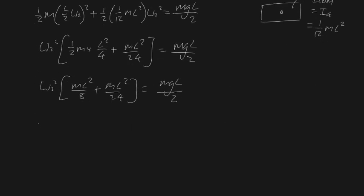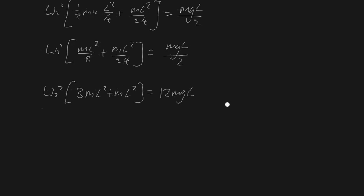And let's multiply both sides by 24. I feel like that's the best way to go. Let's see how many 8's go into 24. It'll be 3. So that'll be 3mL² + mL² equals, what's 24 divided by 2, it's 12mgL.